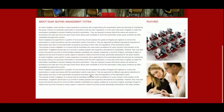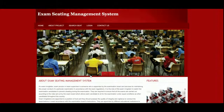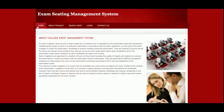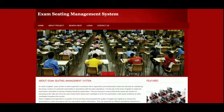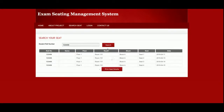This is the home page of the project — it is a static page and you can change the content or images easily. This is the About Us page, also a static page. This is the Search Sheet page where you enter a roll number. Once you click Search, you will be able to find all the details: the floor name, seat number, and date.